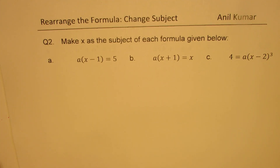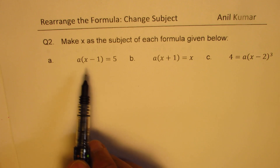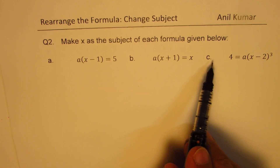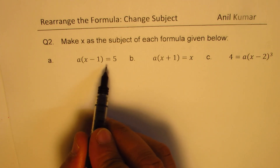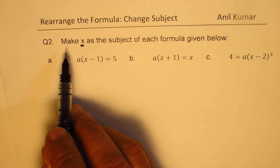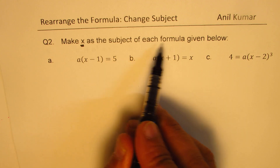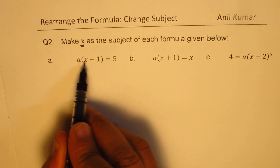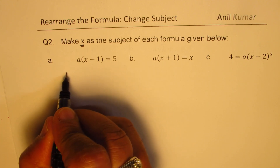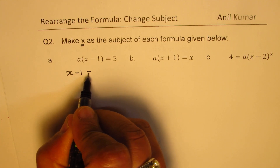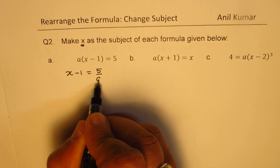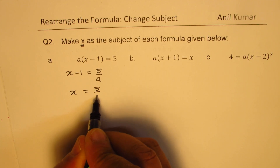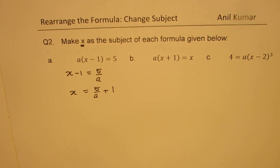Here is question number 2, with three examples. For part A, make X the subject. The first step should be to divide 5 by A, giving X minus 1 equals to 5 divided by A. The next step gives X equals to 5 divided by A plus 1. That is your answer.